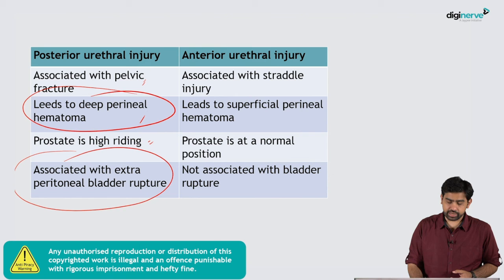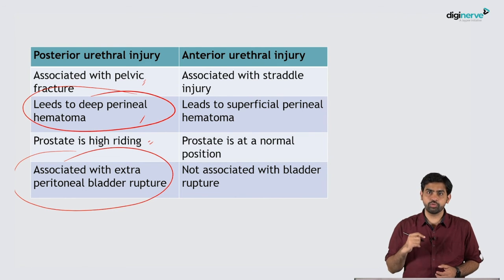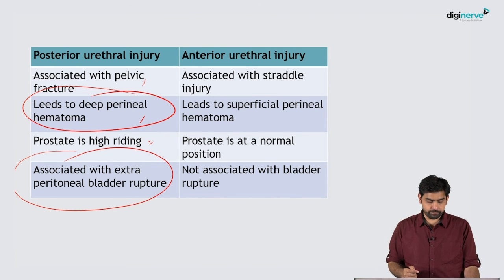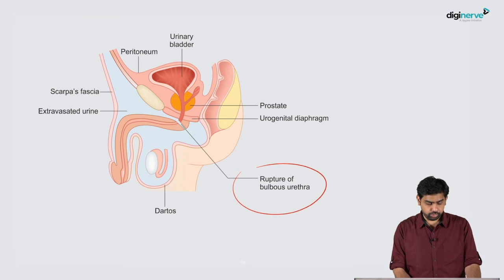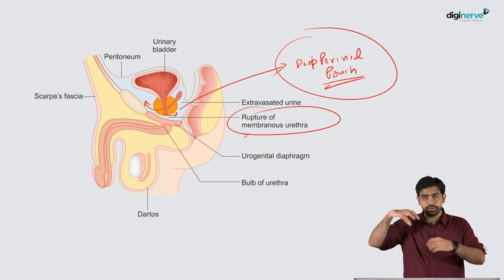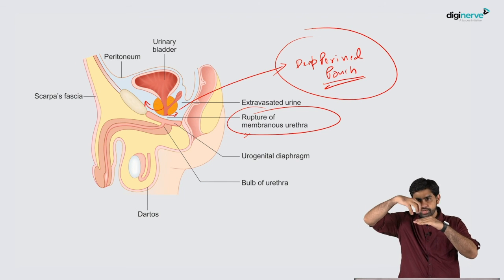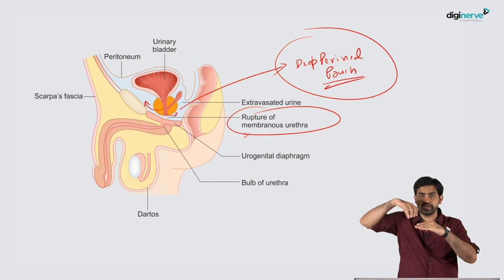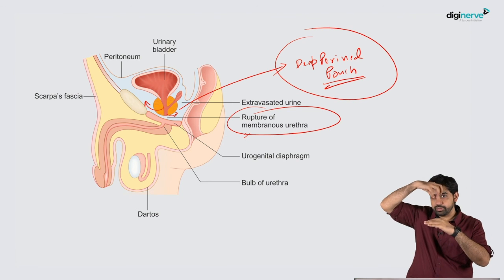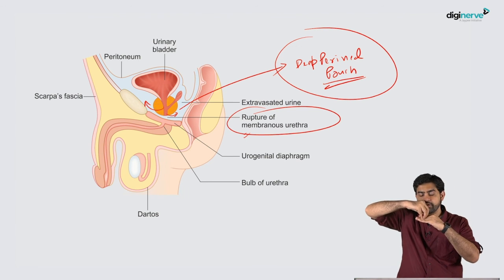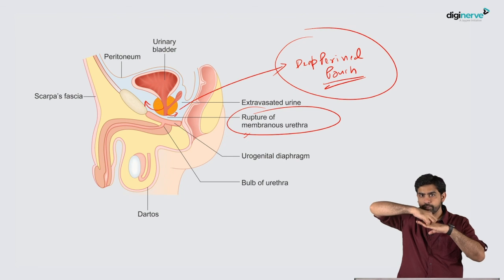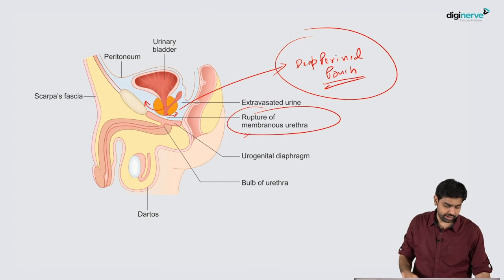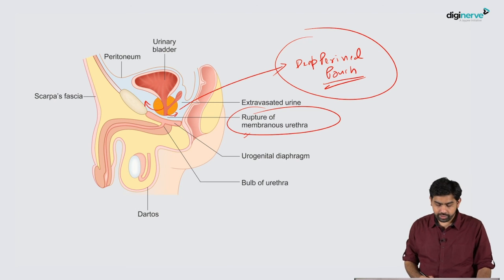In posterior urethral injury, you also find a high-riding prostate. The prostate is normally anchored to the urogenital diaphragm via the membranous urethra. If that connection is disrupted, the prostate is pulled upward — this is called a high-riding prostate, also referred to as the Earle-Mouton sign.